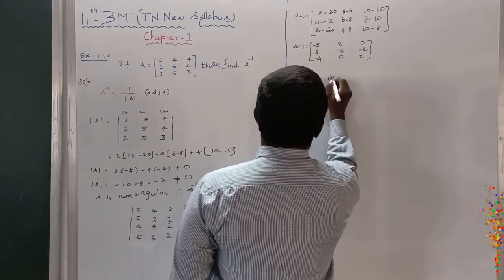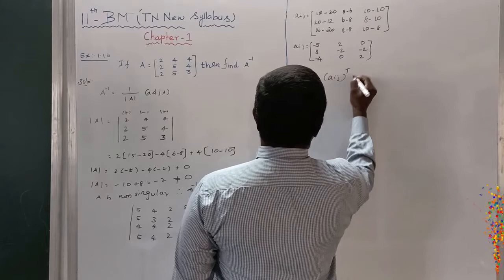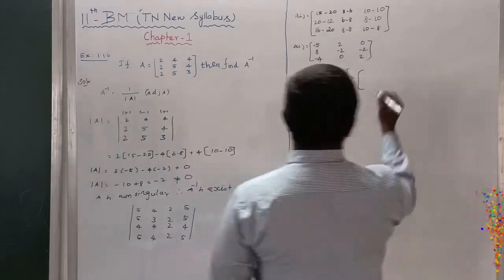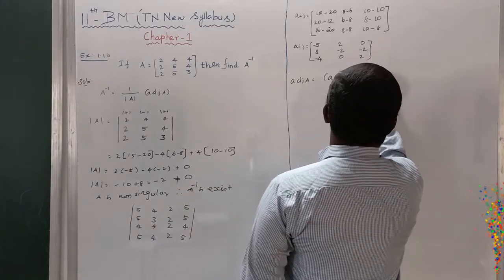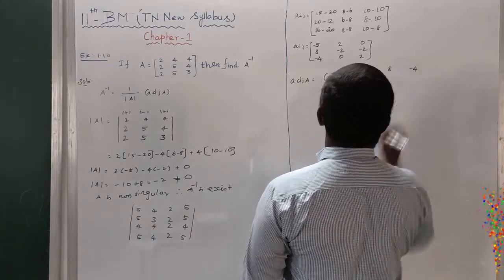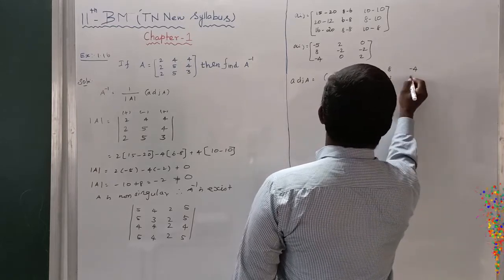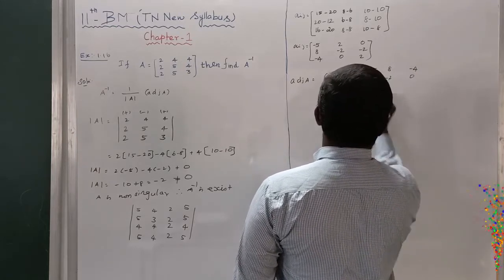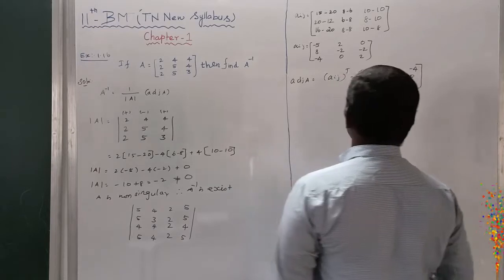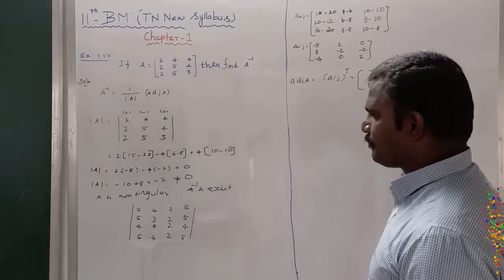Therefore adjoint of A equals A_ij transposed, which is [minus 5, 8, minus 4; 2, minus 2, 0; 0, minus 2, 2]. This is the adjoint of A.